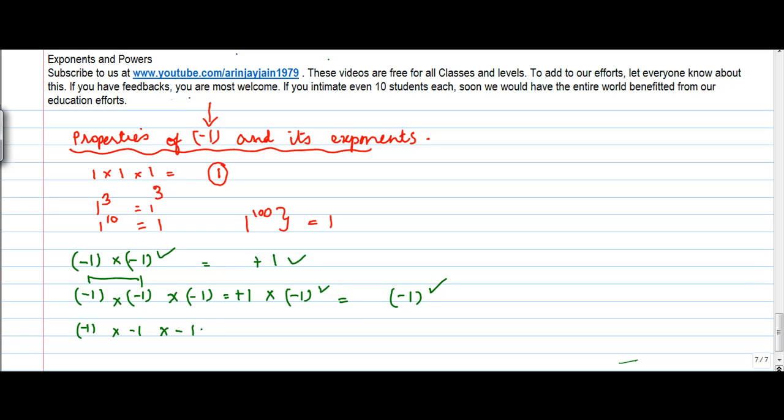Let's form pairs, one pair, two pair. Minus 1 times minus 1 we saw here is equal to 1. Again, minus 1 into 1 is equal to 1, so I got 1.